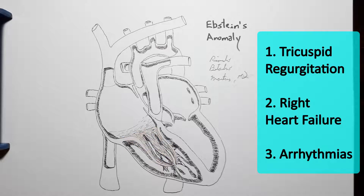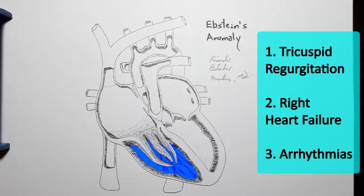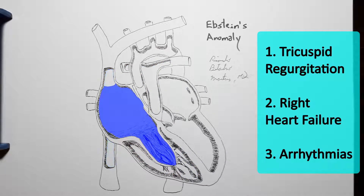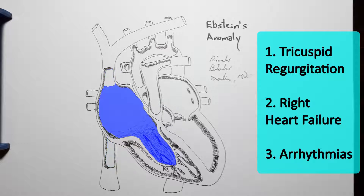Some degree of blood will flow through the tricuspid valve into the right atrium backwards when the right ventricle contracts — tricuspid regurgitation — which may be anything from mild to extremely severe.